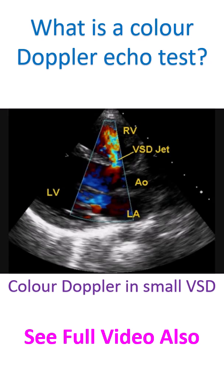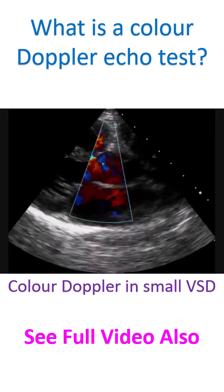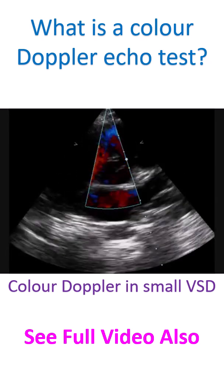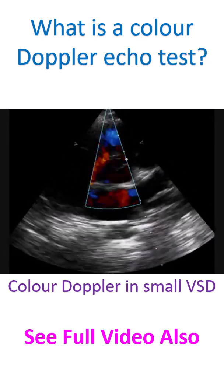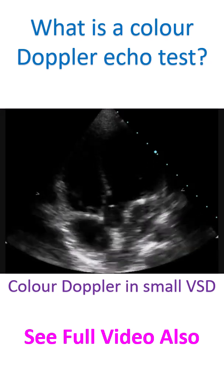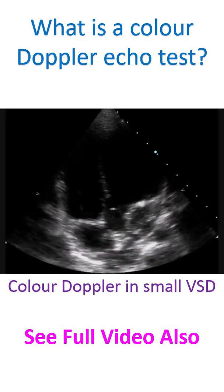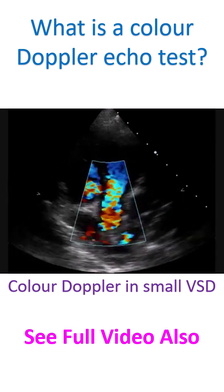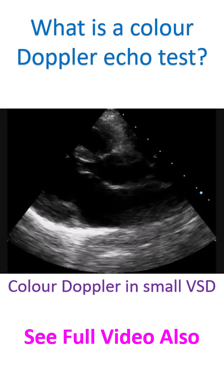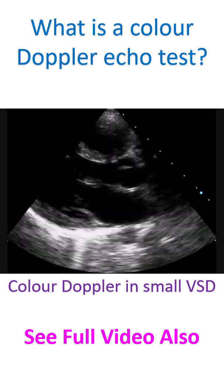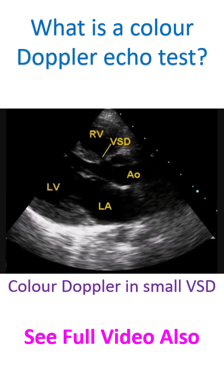Mosaic colored jet on color Doppler is easily seen. For example, when the defect between the two lower chambers — VSD — is small, the pressure difference between the right and left ventricles is high. This produces a turbulent high-velocity jet which can be easily seen on color Doppler.